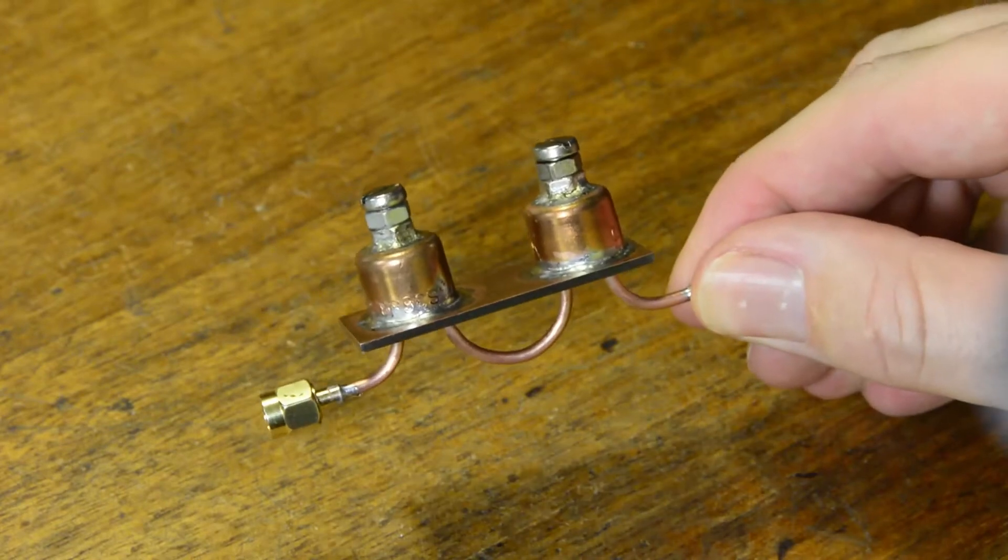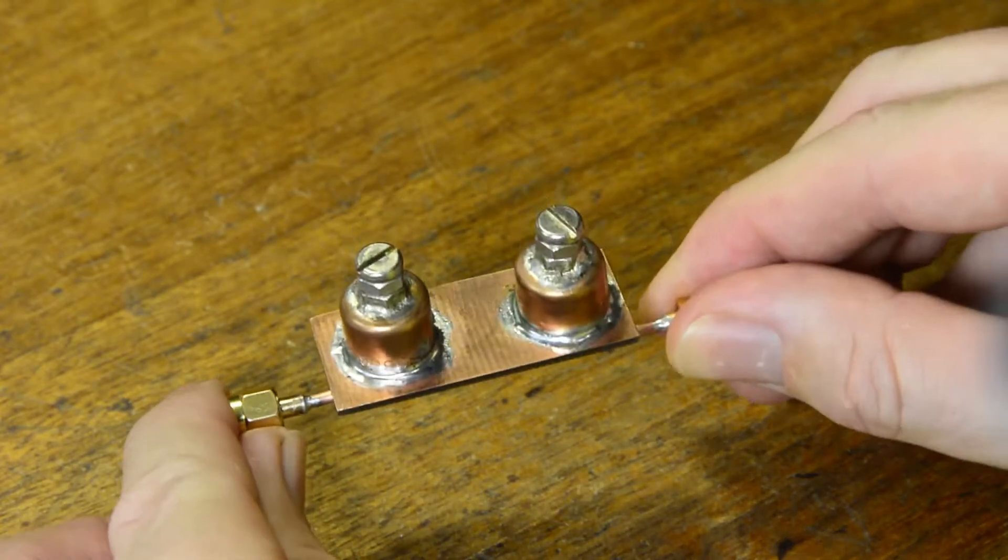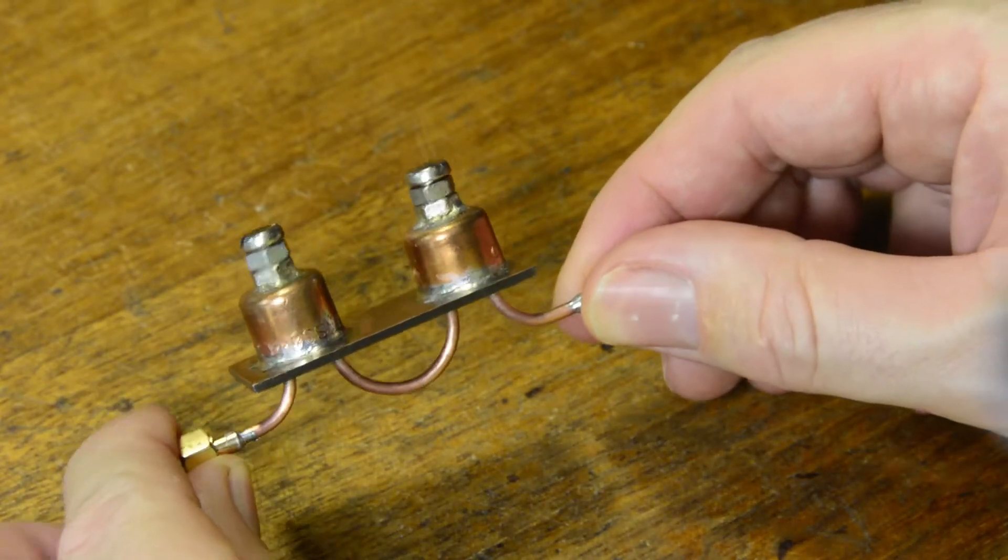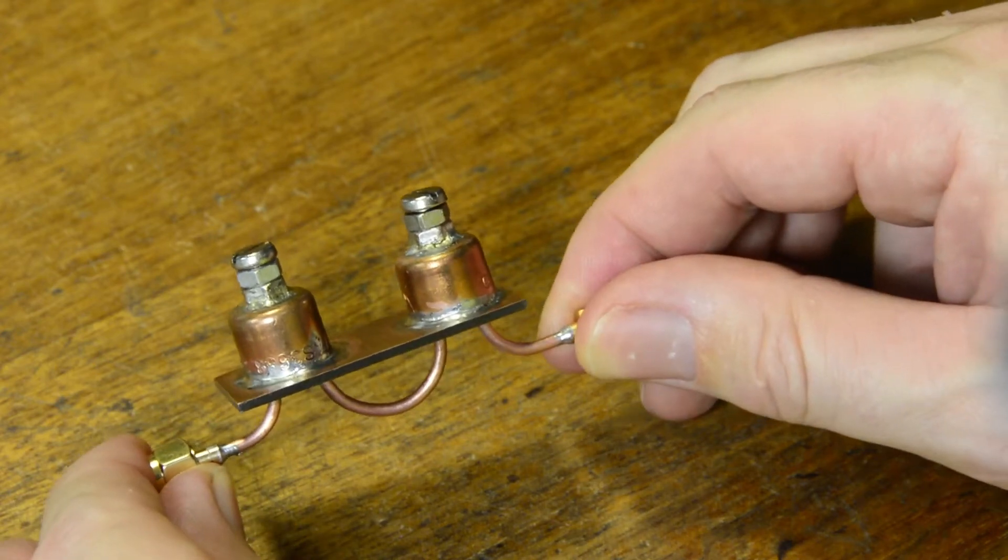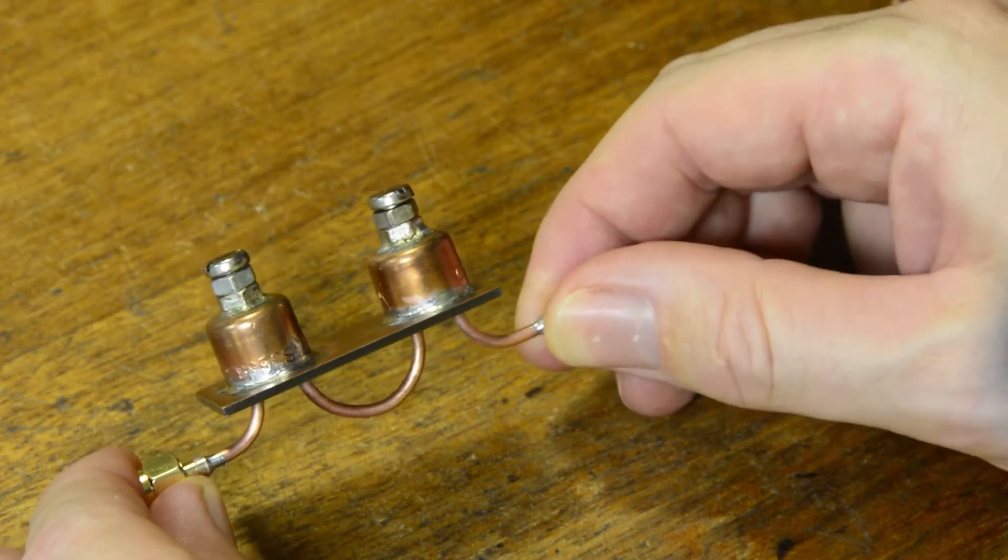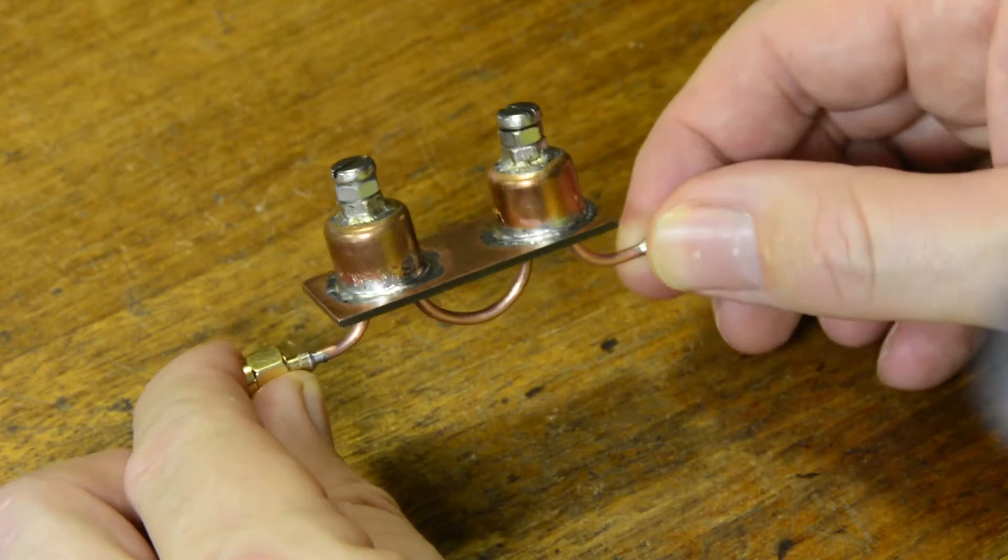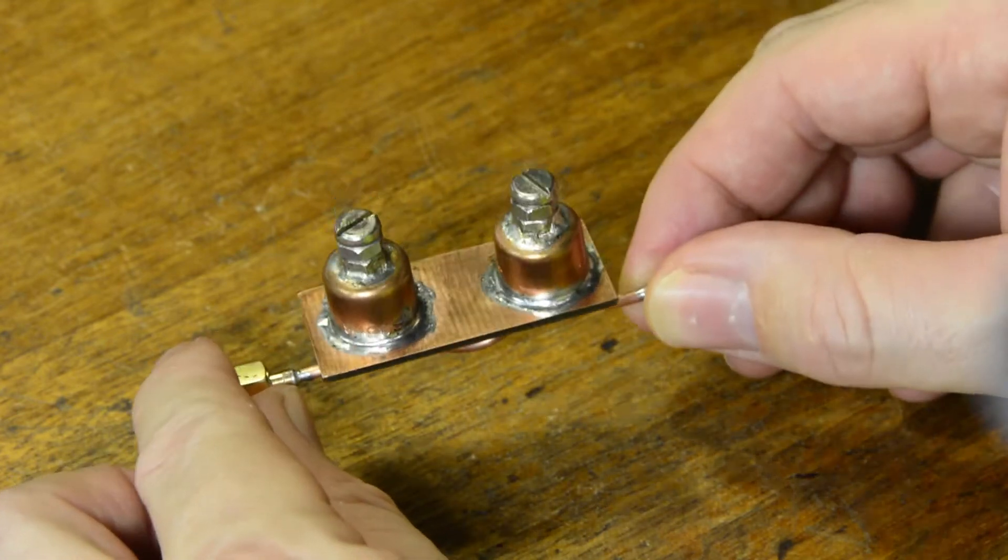This is a 10 gigahertz bandpass filter. Why would I want one of these? Well to help generate a nice clean signal at 10,368 megahertz to become a reference for checking receivers and things.